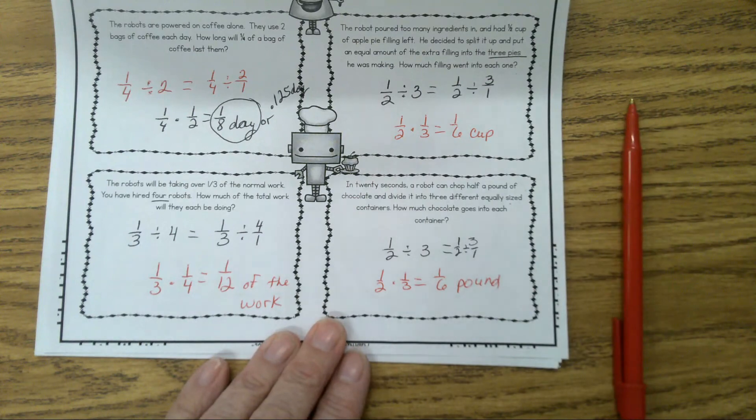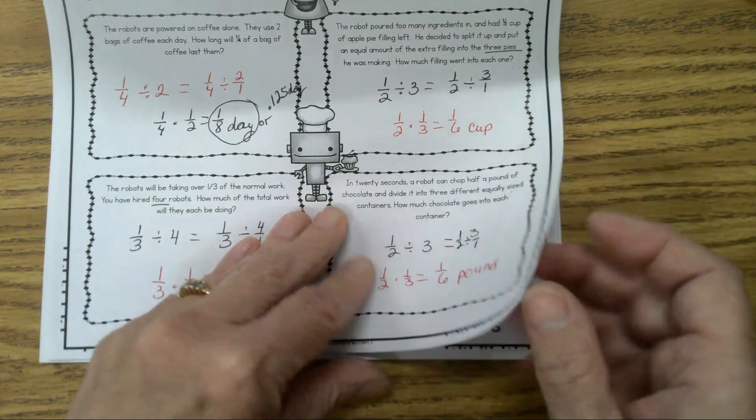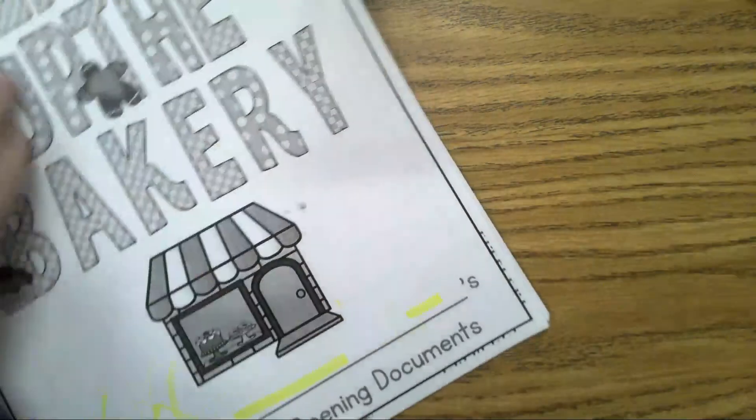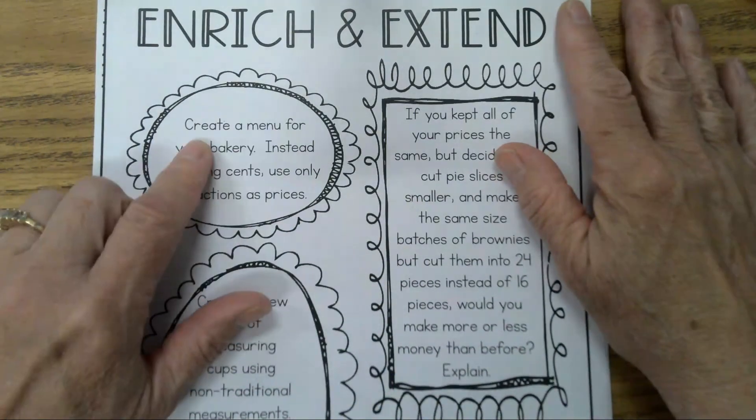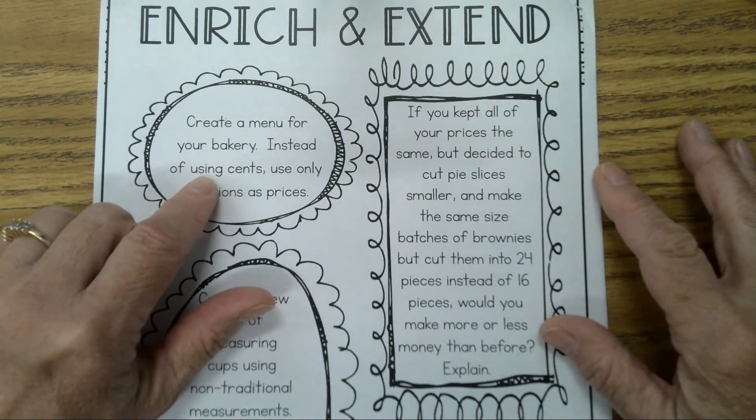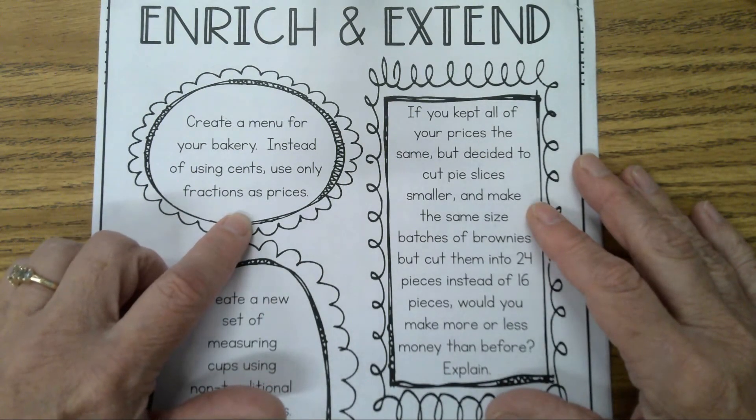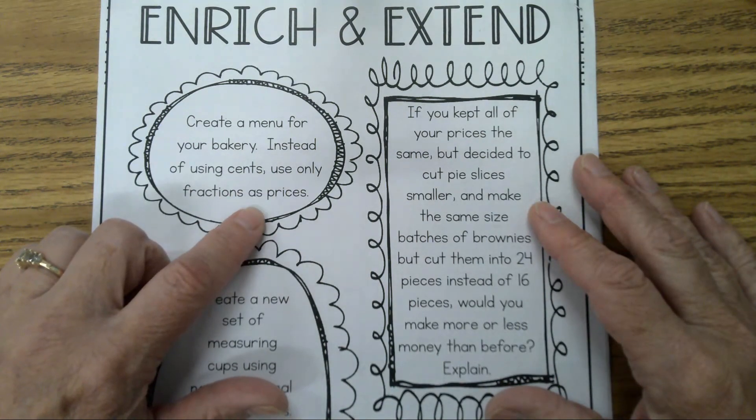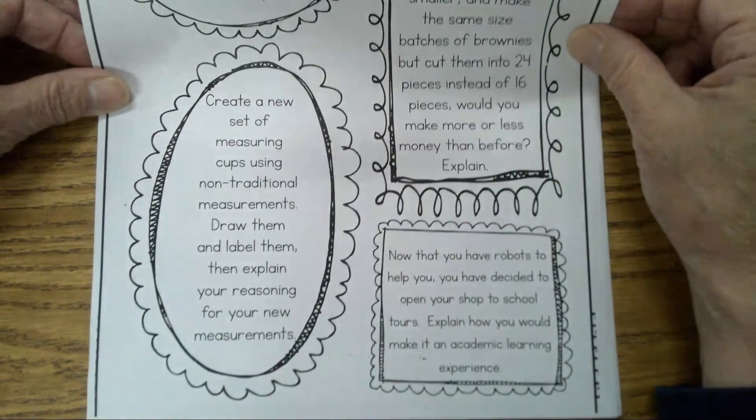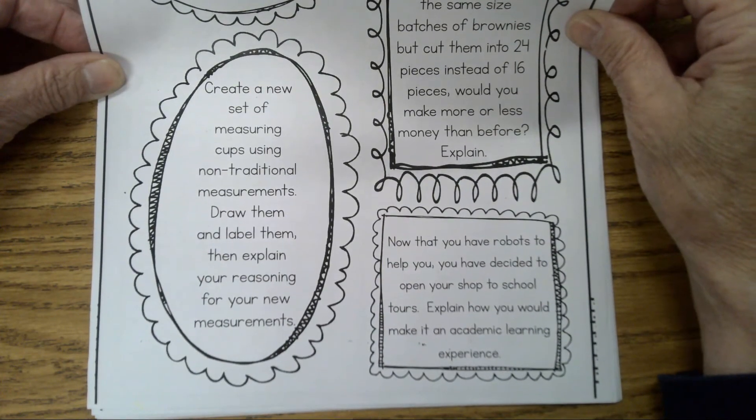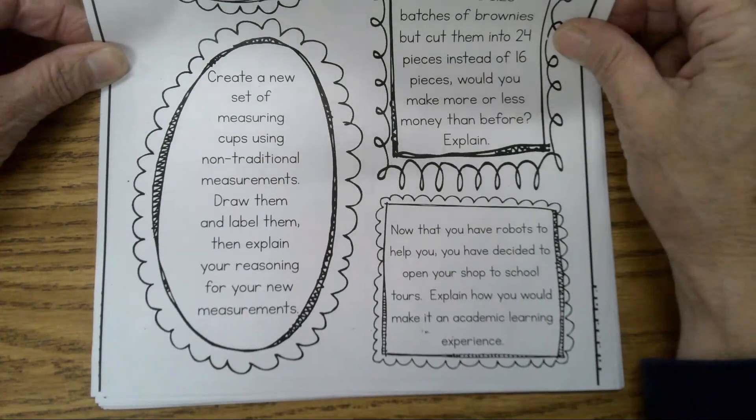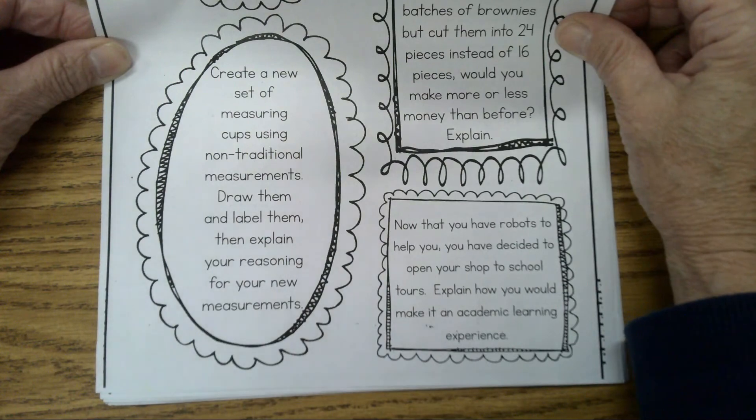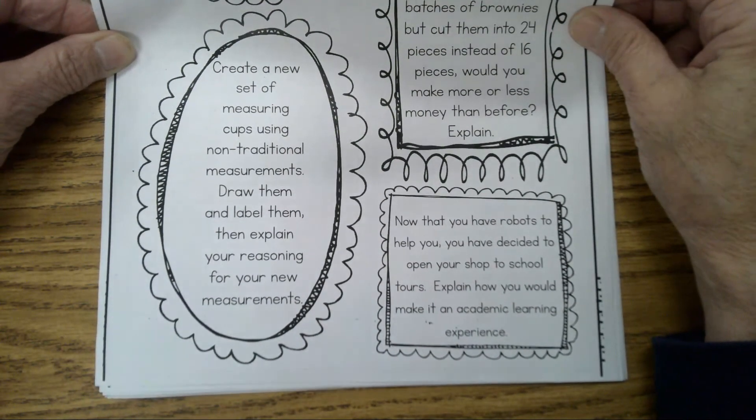Now for the very last part of your project, before you can turn it in, on a piece of paper, you choose one of these things on the back. You can choose: create a menu for your bakery instead of using cents, use only fractions as prices. That one's probably not one you want to do, it's going to take longer. Create a new set of measuring cups using non-traditional measurements, draw them and label them, then explain your reasoning for your new measurements. If you are a creative person and you want to change the measurement system, this is for you. That would bother me to do that because I'm so used to the traditional ones.